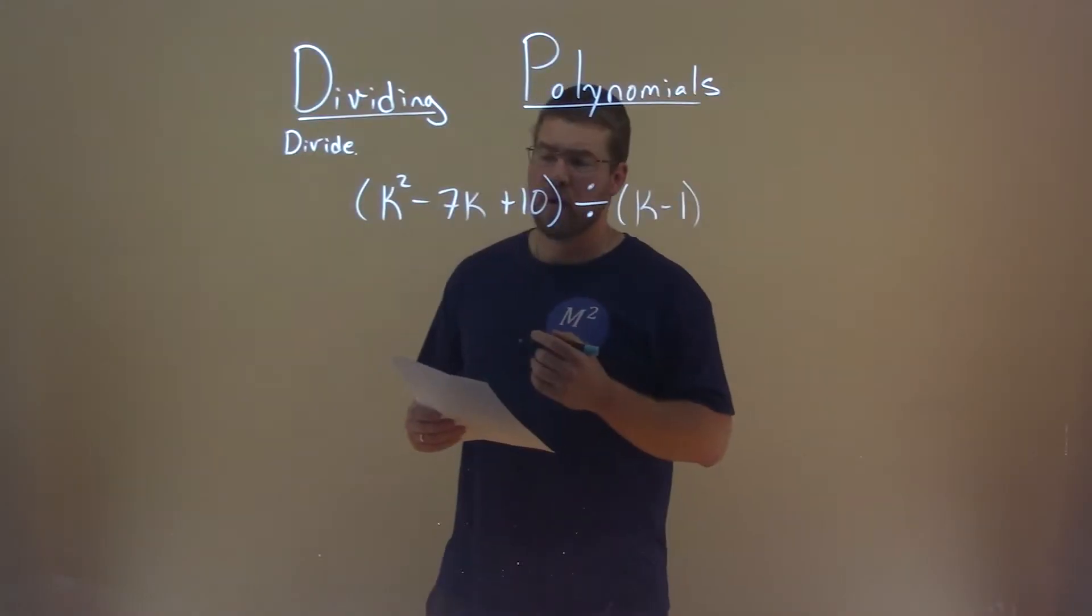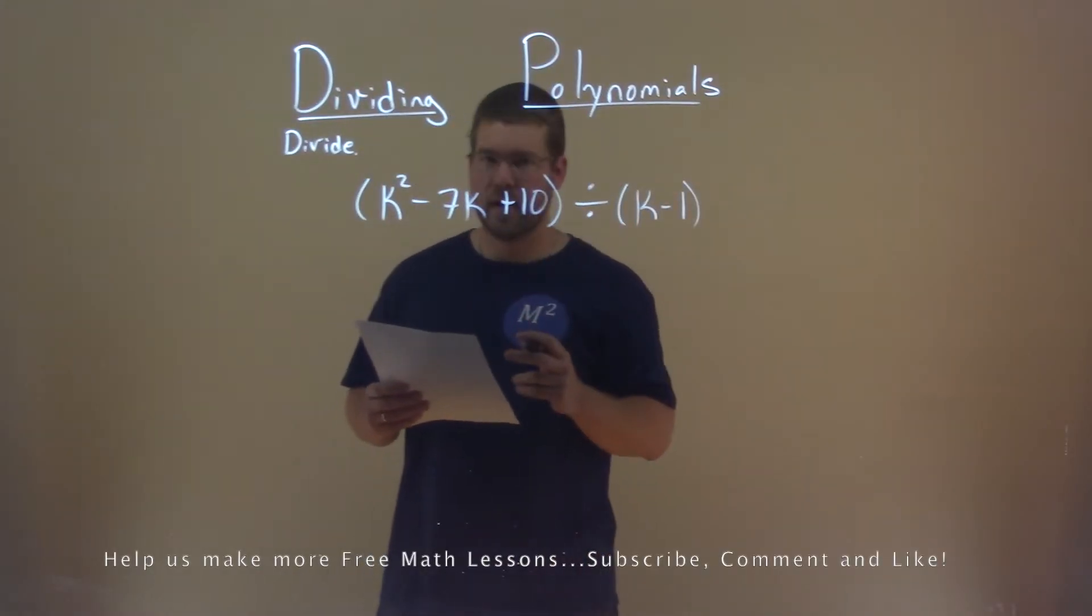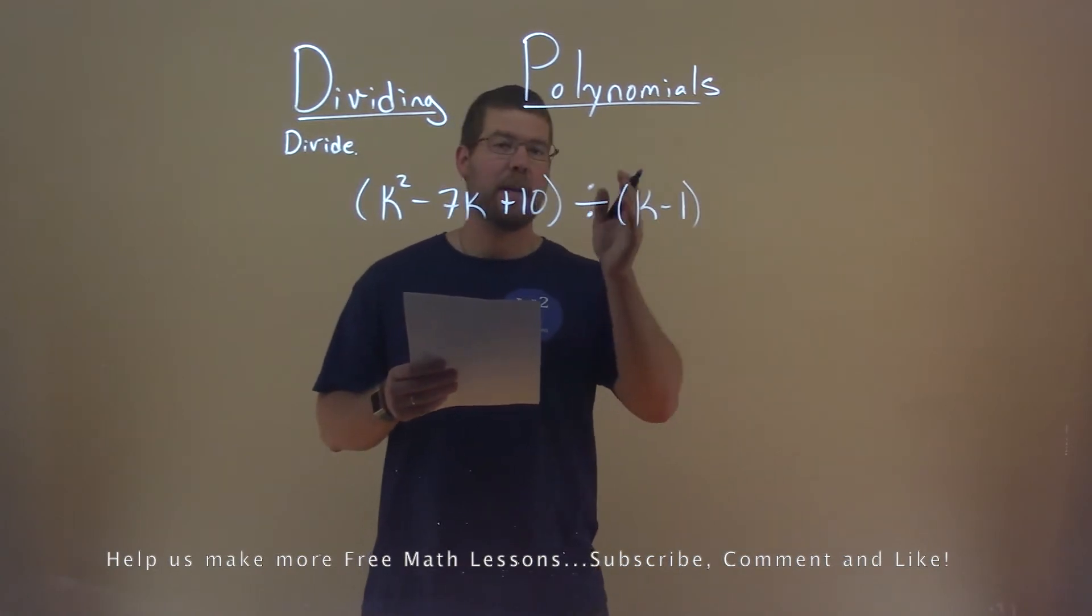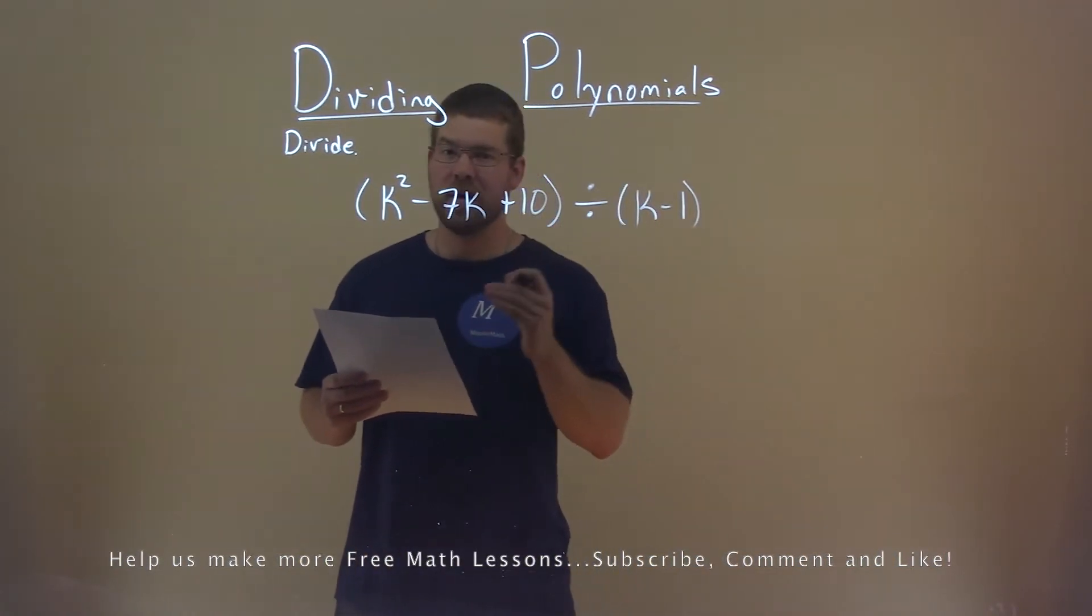We're given this problem right here. k squared minus 7k plus 10 divided by k minus 1, and we need to divide this.